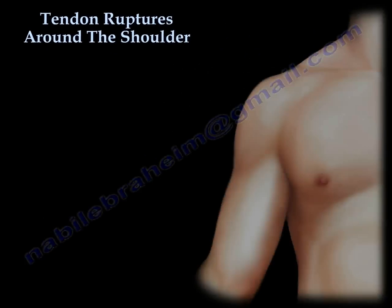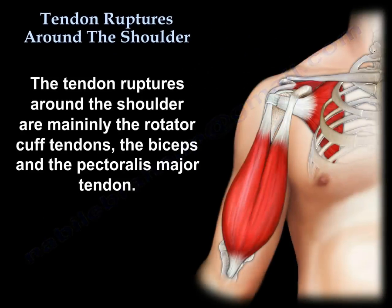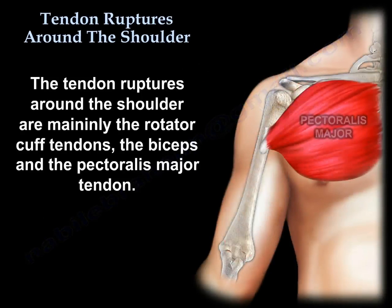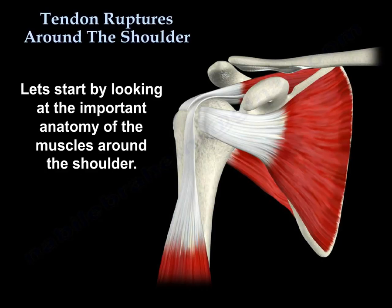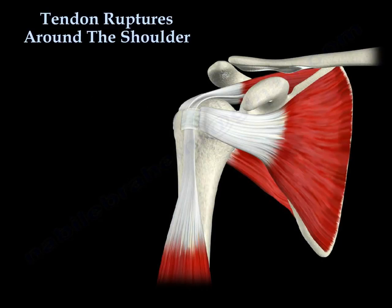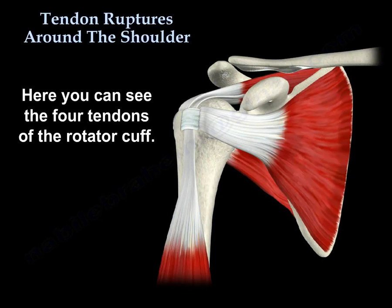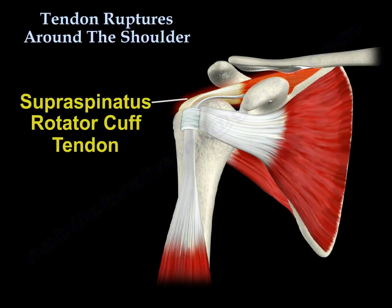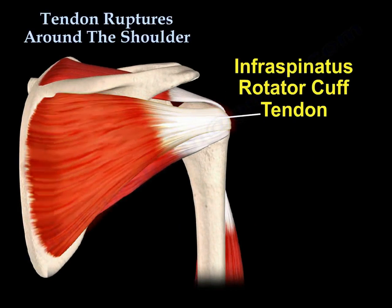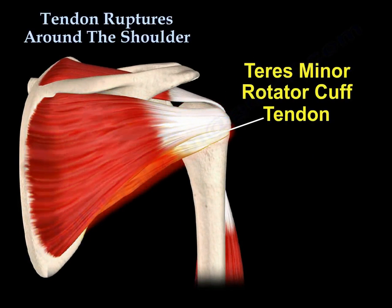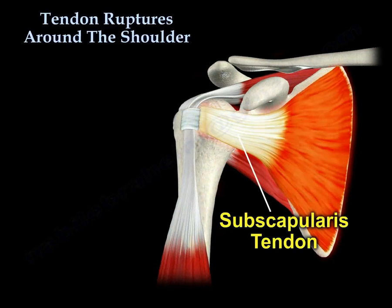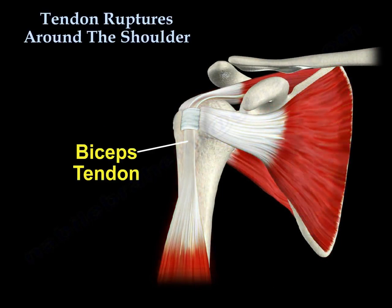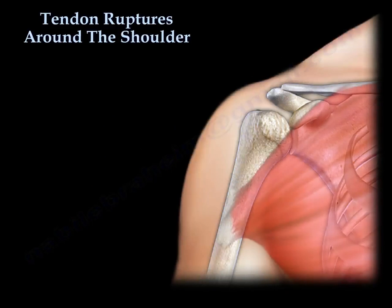Tendon ruptures around the shoulder are mainly the rotator cuff tendons, the biceps, and the pectoralis major tendon. Let's start by looking at the important anatomy of the muscles around the shoulder. Here you can see the rotator cuff tendons — the four tendons: the supraspinatus tendon, the infraspinatus tendon, the teres minor tendon, and the subscapularis tendon. You can also see the biceps tendon and the pectoralis major tendon.